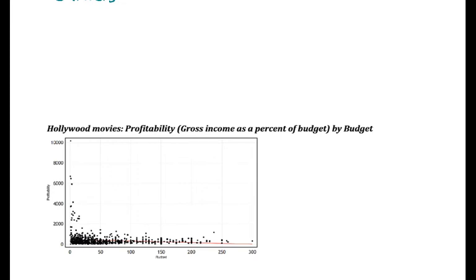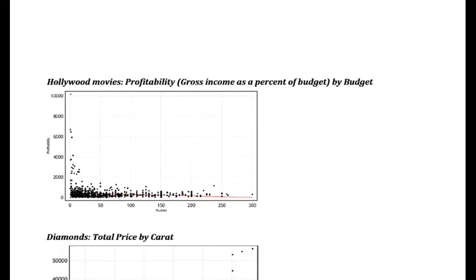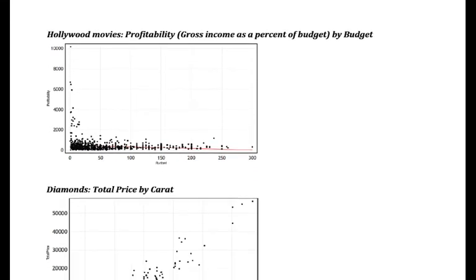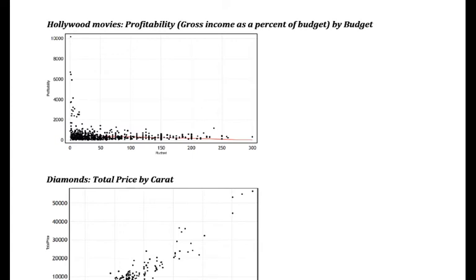Just to look at a couple of brief examples here, we have Hollywood movies' profitability, which is gross income as a percent of budget. This is taking the gross income and dividing it by the budget to create a ratio. Looking at that with respect to budget...